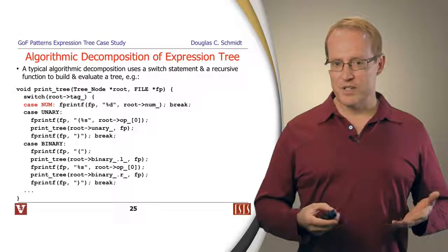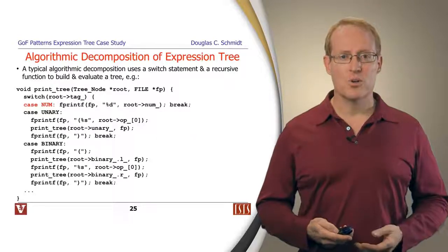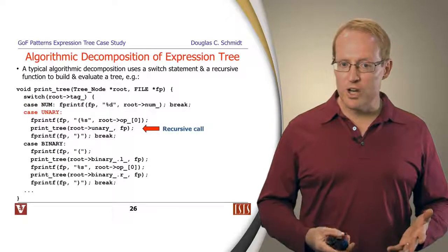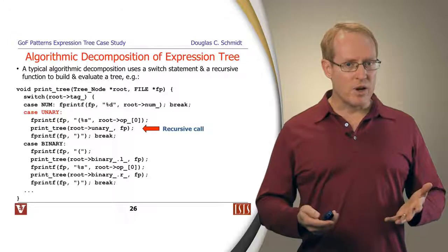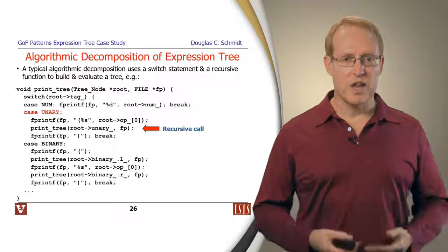So, for example, if it's a number node, it'll go ahead and print out its contents to the file, print out the number that corresponds to that. If it's a unary node, it'll first print out the operator, and then it'll go ahead and make a recursive call to print out the child.